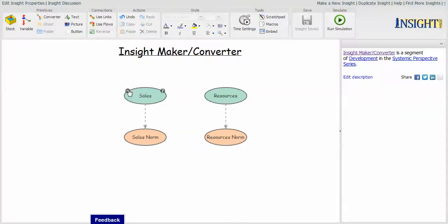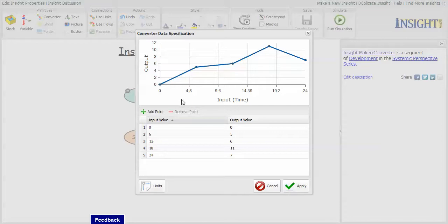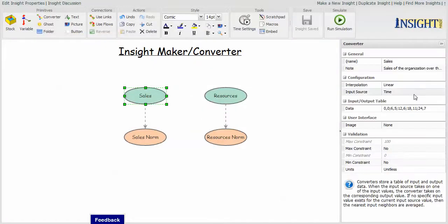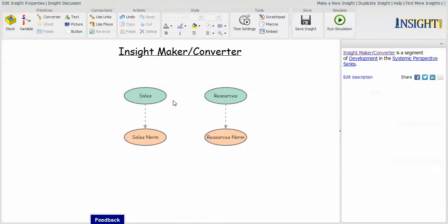When you define it, the default is that the input is the simulation time, though you can define a converter based upon the values of some other variable so that the output values are dependent upon some other input variable. You define that in terms of the input source here.